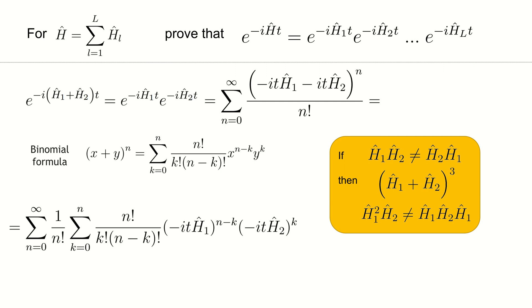But for our proof, we assume that h1 and h2 commute with each other and use the binomial formula.